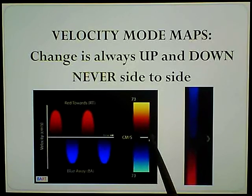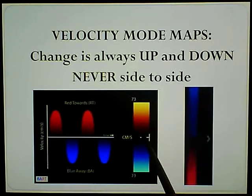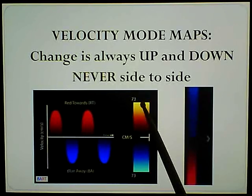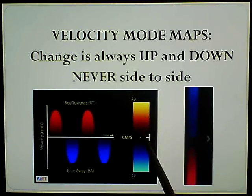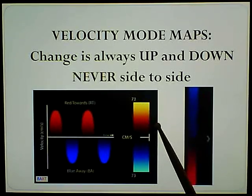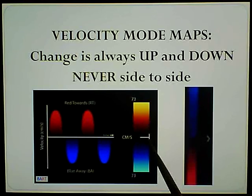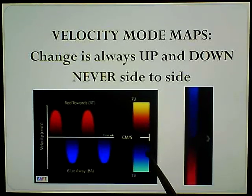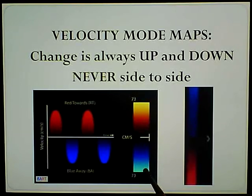Below the line is away from the transducer. In this case, red is towards the transducer, blue is away. You will notice from that black line, it's a little darker, then it's red, then it gets yellow. This is slower to faster. This is dark blue, then blue, then light blue - slower to faster, but away from the transducer.